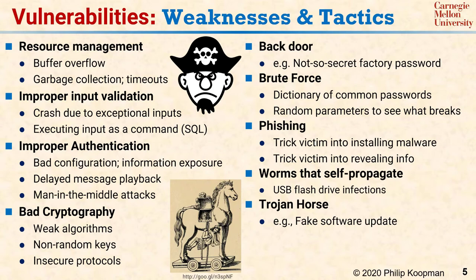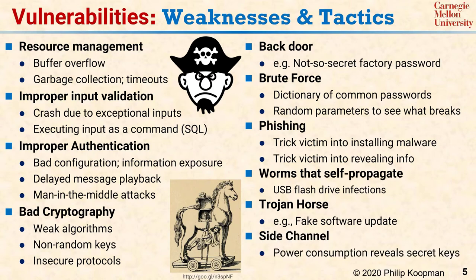To emphasize once again that perfect security is typically unachievable, attackers can reverse engineer your system by monitoring its power consumption while it's running encryption software and recover secret cryptographic keys that way — just by watching power. They can also deduce proprietary algorithms, and if that's too difficult, they can just open up the chip and see what's inside. These are some of the more common weaknesses and tactics you should consider when creating your security plan.